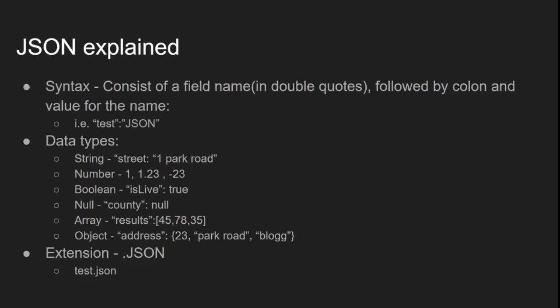The different data types start with string. A string might be, for example, 'street' — the field name goes in double quotes, and then the value, for example, 'One Parkway', follows after the colon. Note that the field name must be properly enclosed in double quotes.